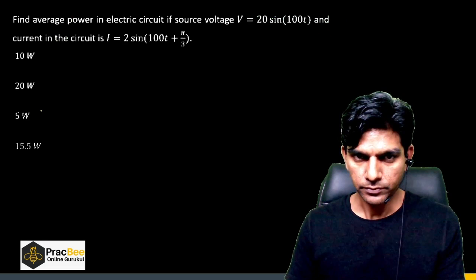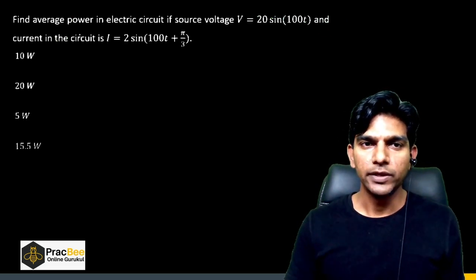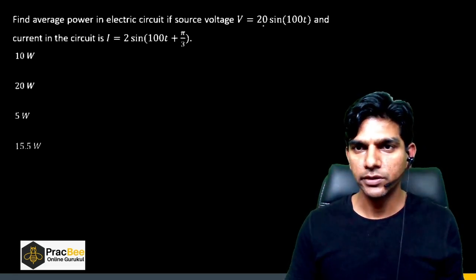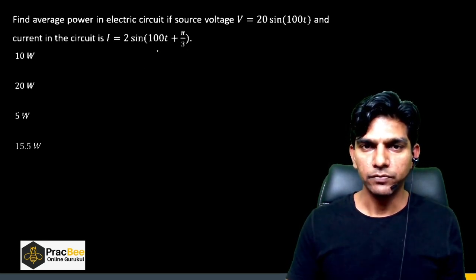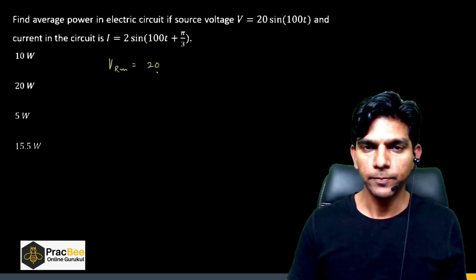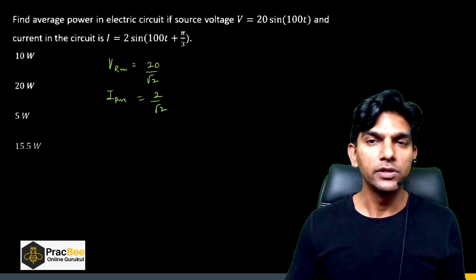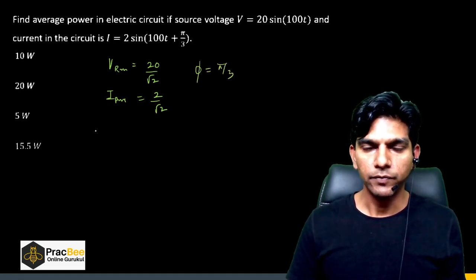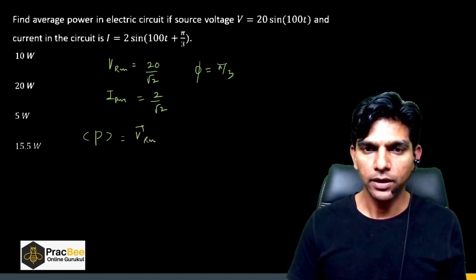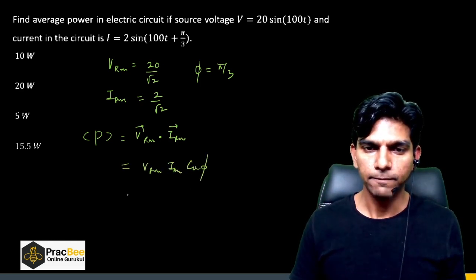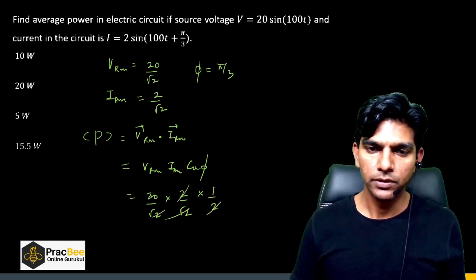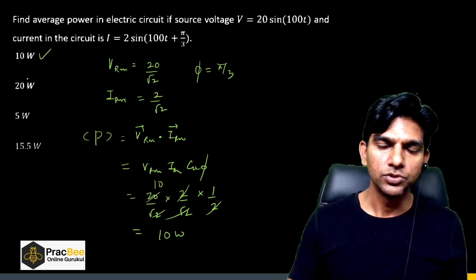The next question is from Alternating Current — average power. Source voltage is 20 sin(100t) and current is 2 sin(100t + π/3). V_rms = 20/√2, I_rms = 2/√2, and phase difference φ = π/3. Average power = V_rms × I_rms × cosφ = (20/√2)(2/√2)(cos60°) = 20 × (1/2) = 10 W. Option A is the right answer.